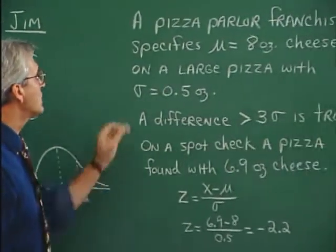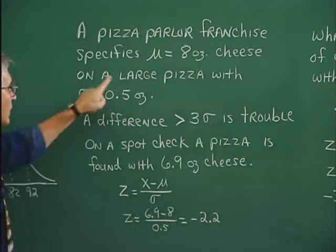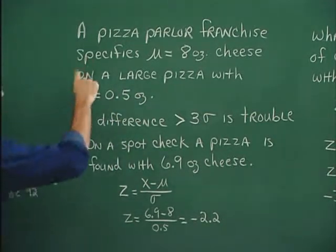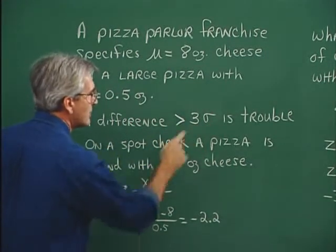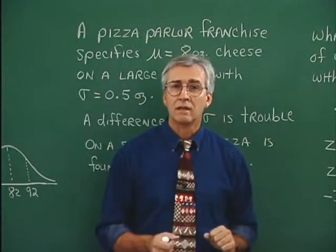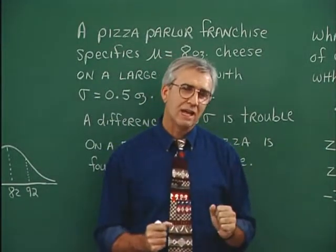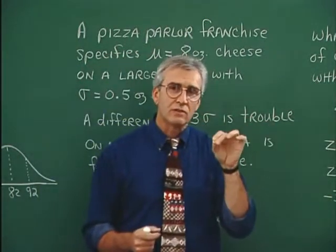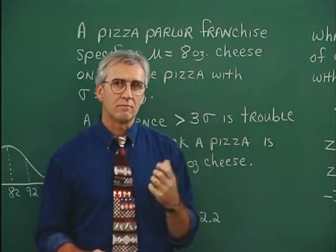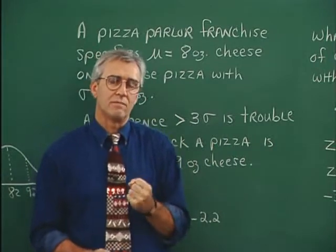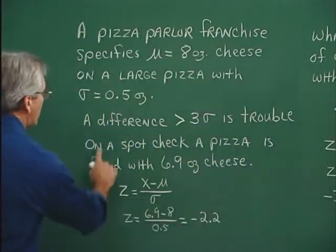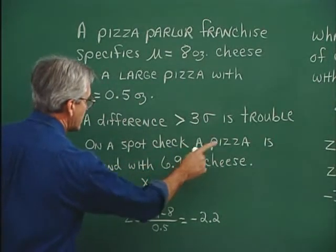A pizza parlor franchise specifies a mean of 8 ounces of cheese on a large pizza with a standard deviation of one-half ounce. Any difference above three standard deviations is trouble — the franchise owner is likely to lose the franchise if a spot check finds the amount of cheese is beyond three standard deviations. On a spot check, a pizza is found with 6.9 ounces of cheese. Is there trouble?